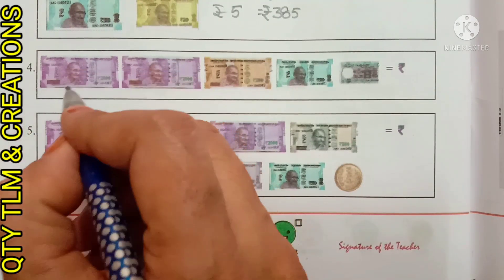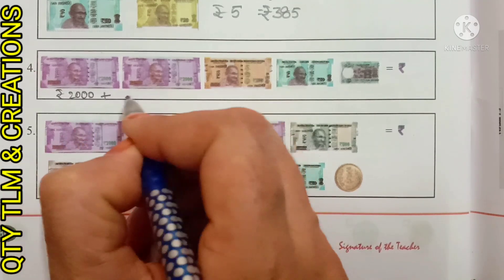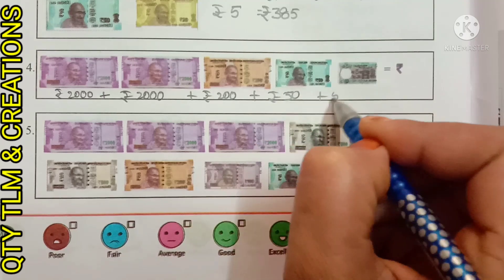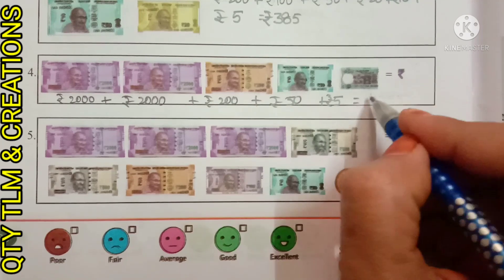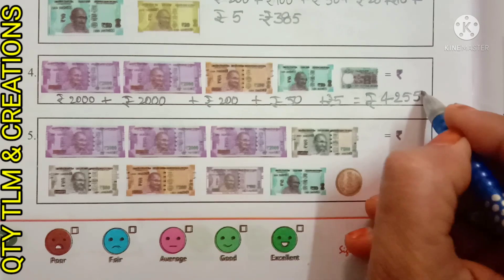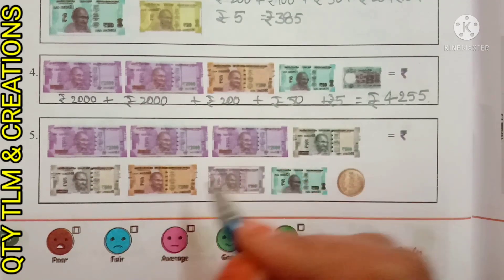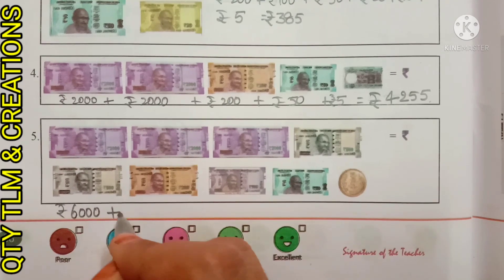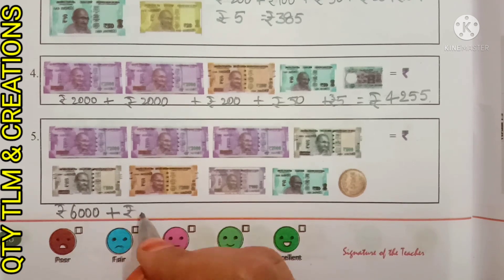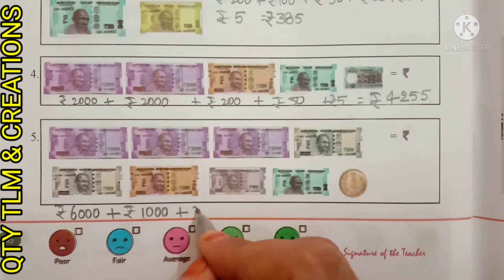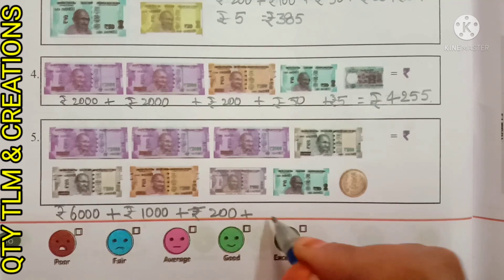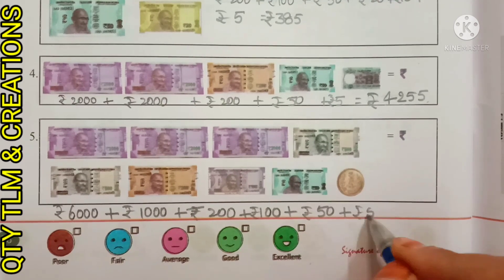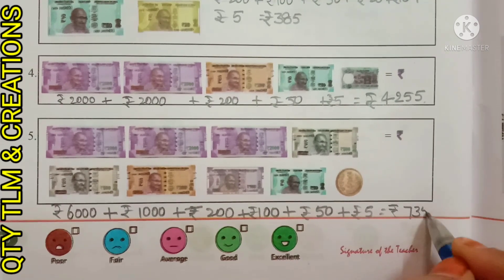Next question: 2000 rupees plus 2000 rupees plus 200 rupees plus 50 rupees plus 5 rupees equals 4255 rupees. Next question: 2000 rupee notes are 3, so 6000. Plus 500 notes are 2, so 1000. Plus 1 note of 200, plus 100, plus 50 rupees, plus 5 rupees — that equals 7355 rupees.